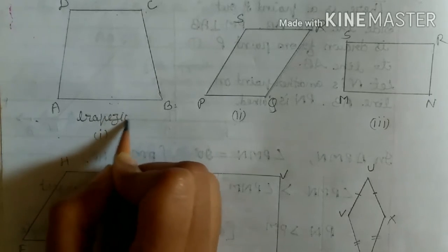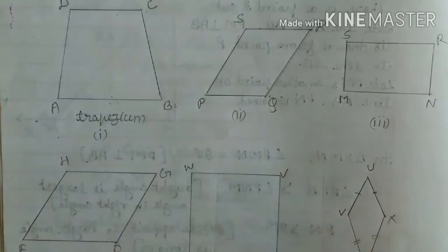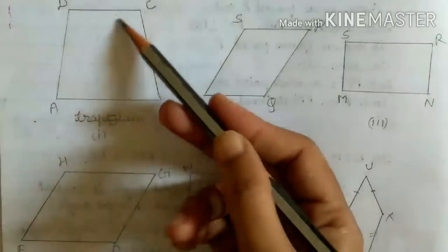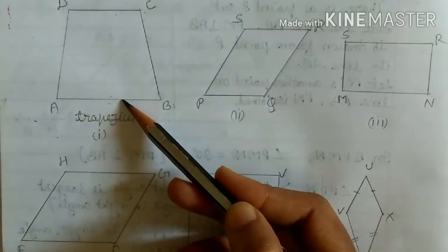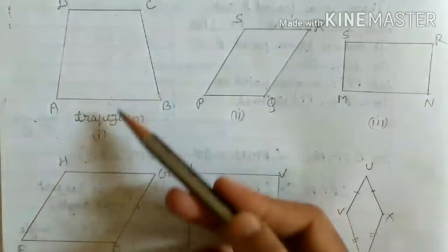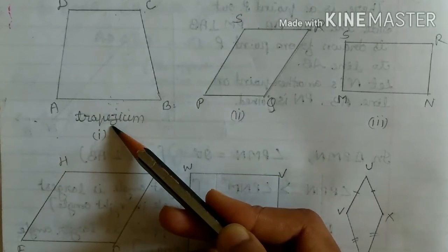One pair of sides is parallel in a trapezium.